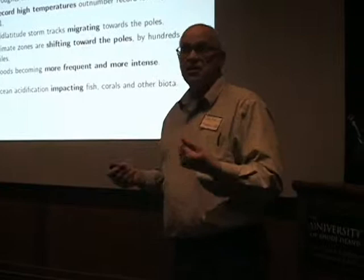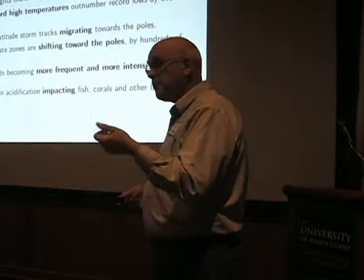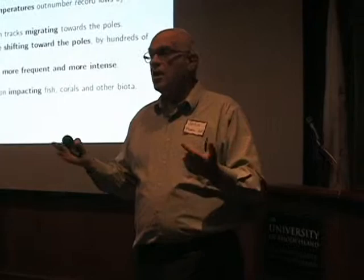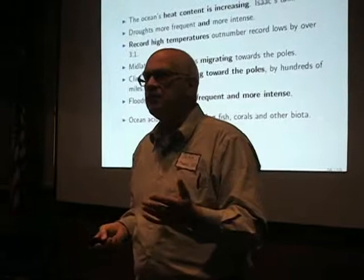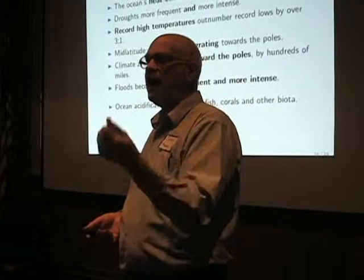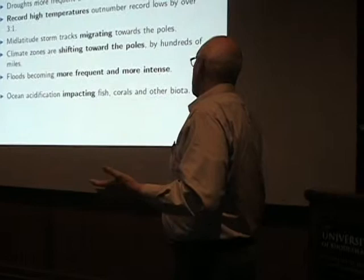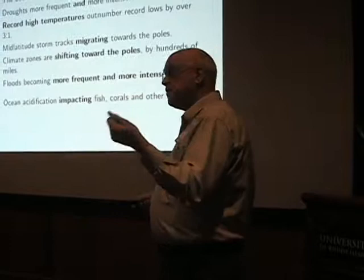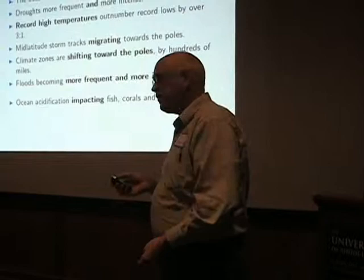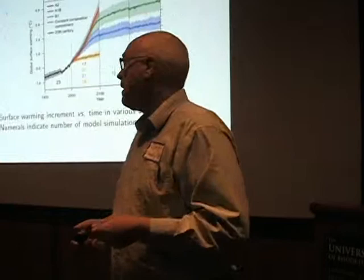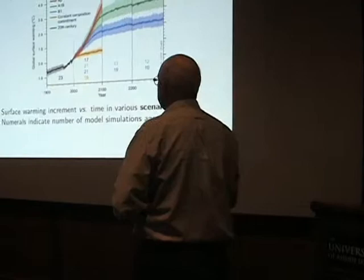Droughts are a damaging effect on the environment; their frequency and intensity have been increasing. Record high temperatures observed at weather stations have become more common, while record low temperatures have become less common — high temperature records are three times more common than low temperature records in recent years. Mid-latitude storm tracks and climate zones are shifting towards the poles. Floods have become more frequent and more intense, just as have droughts. Ocean acidification is an effect that's part of the change in the carbon budget, and that's having a bad impact on fish, on coral reefs, and other marine resources.